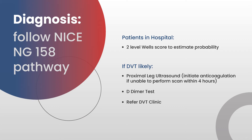When thinking about diagnosis, we need to follow the NICE-NG-158 pathway. If patients present at hospital, they will first need a two-level Wells score to estimate the probability of a DVT. If this shows that a DVT is likely, the patient will then have a proximal leg ultrasound. If there is delay and the hospital is unable to perform the scan within four hours, anticoagulation should start in preparation. Patients will also have a D-dimer test to measure D-dimer levels in the blood, indicating possible clotting. The patient will then be referred to the DVT clinic or anticoagulation pathway for treatment.